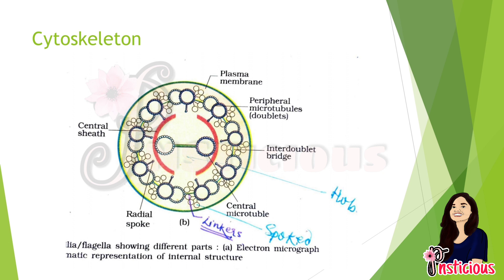The cytoskeleton is an elaborate network of filamentous proteinaceous structures present in the cytoplasm. It is involved in many functions such as providing support, motility, and maintenance of the shape of the cell — just as our skeleton maintains our body's posture, the cytoskeleton is very necessary in every cell.